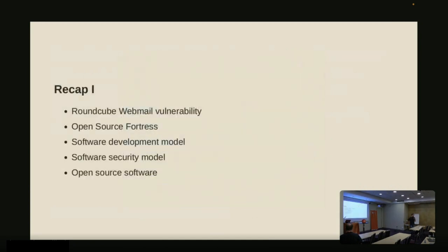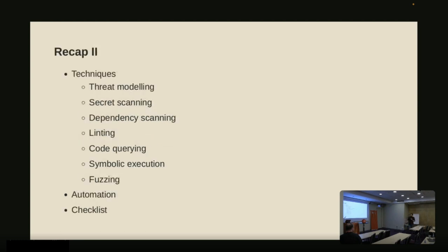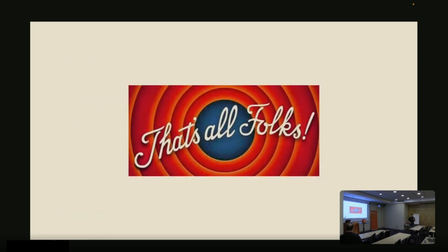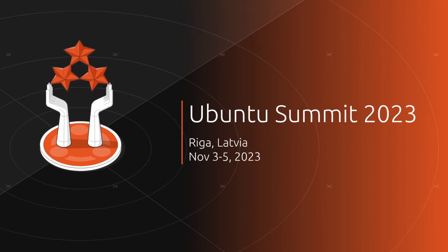To recap the ideal plan for this workshop: we had an example with RoundCube, discussed OSS Fortress, the software development model, the software security model, the open source software ecosystem, the techniques — threat modeling, secret detection, dependency scanning, linting, code querying, fuzzing, symbolic execution — automation, and the final checklist. All materials will be open sourced including this presentation, so feel free to finish this at home. If there is any issue with the documentation or the solutions, just create a GitHub issue and I'll patch it. Thanks for participating.